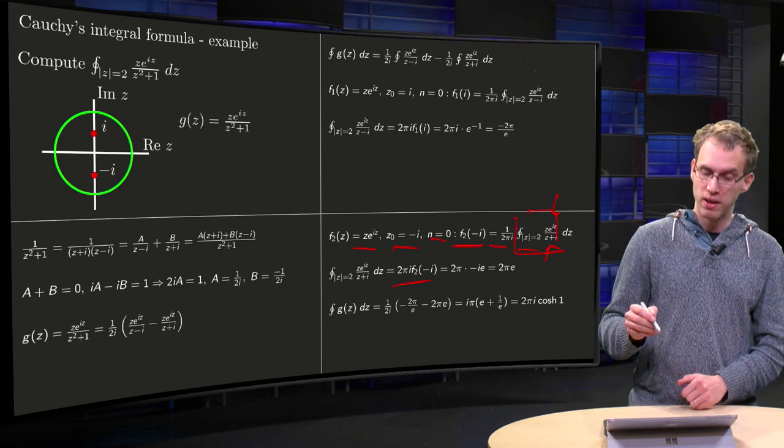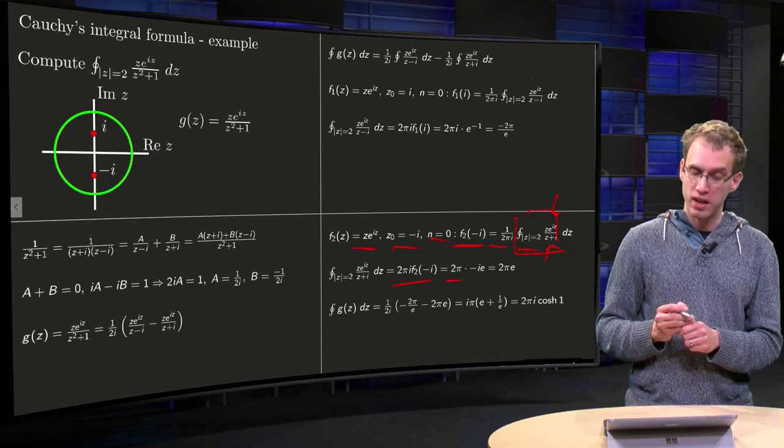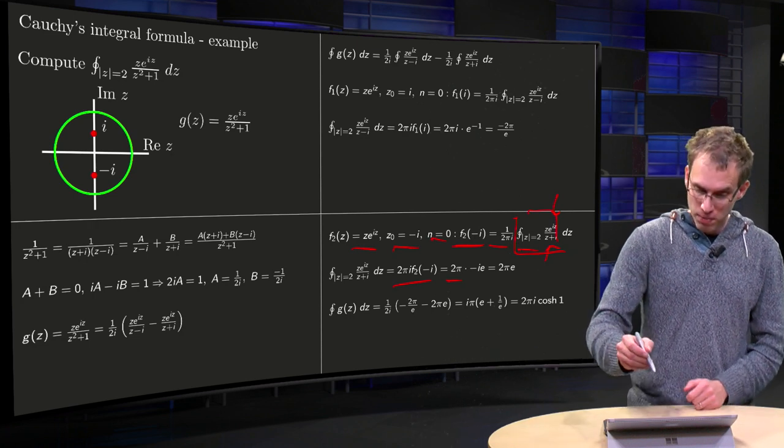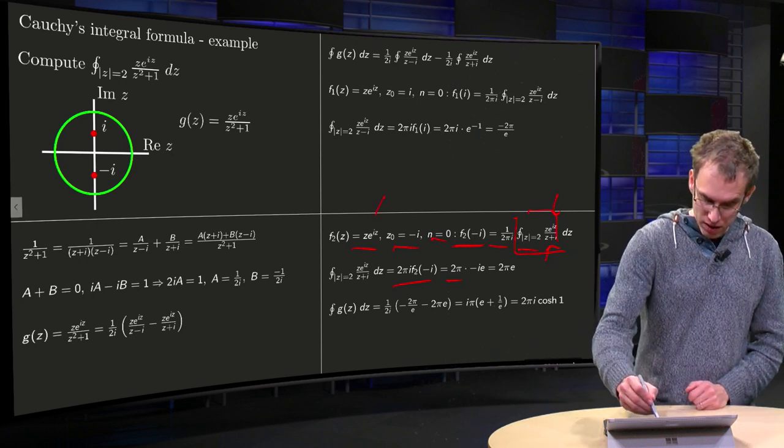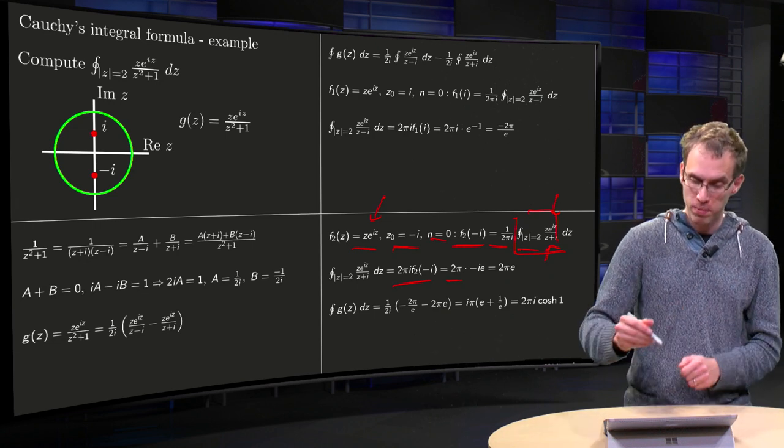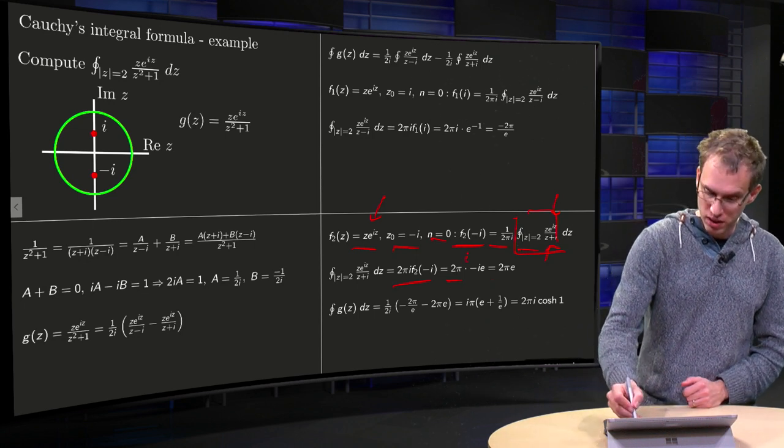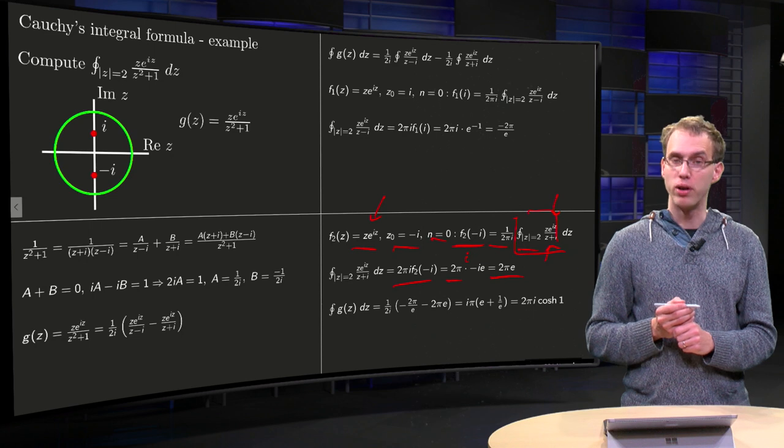That integral equals 2^i times f₂ at minus i, so we get in this case 2πi·f₂ at minus i equals, plug in minus i over here, so we get minus i times the Euler number, and i is also missing here, but here this is correct again, yields 2π times the Euler number.